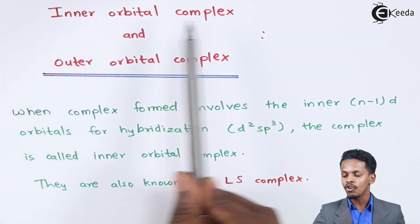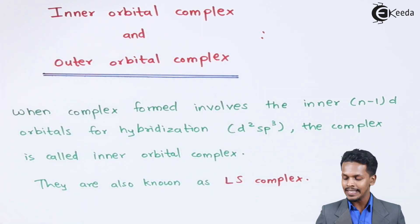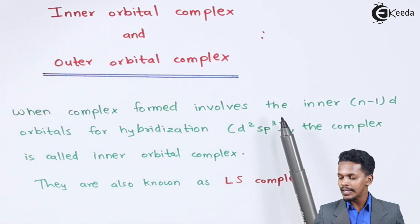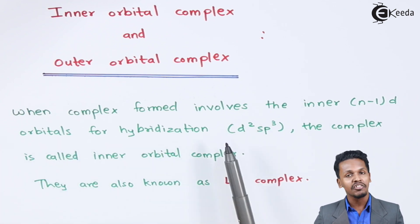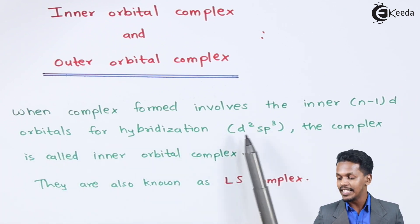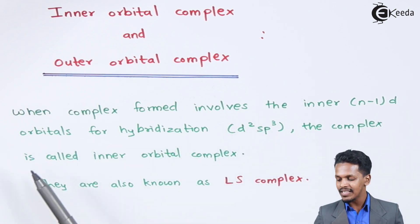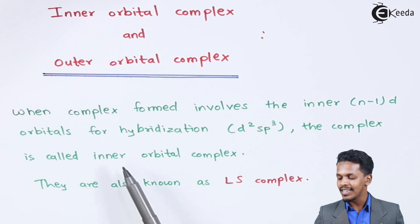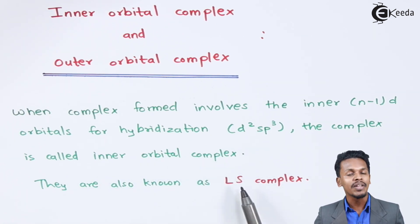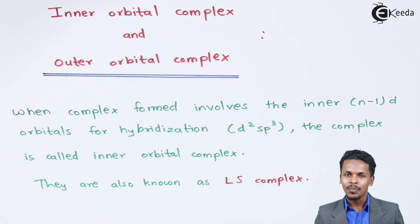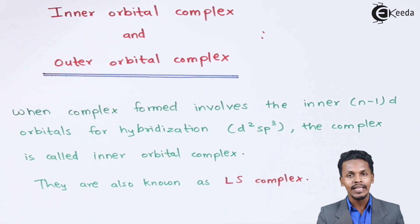First of all let me talk about the inner orbital complex. When a complex forms involving the inner (n-1)d orbitals for hybridization, that is d2sp3, the complex is called an inner orbital complex and they are also known as LS complex, which is low spin complex. Let me give you an example so that you could understand this in a very easy way.